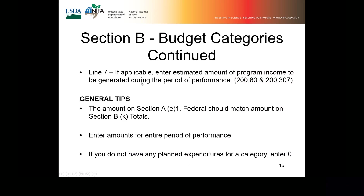There is also a line seven. If applicable, you would enter your estimated amount of program income that would be generated during the period of performance. We do not see this a lot, but if it does apply to your program, I've indicated some CFR references here so you can review whether you need to populate that field.